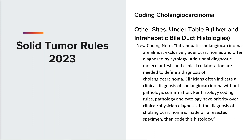For coding histology of liver and intrahepatic bile duct primaries, there is a very helpful clarification made in the other sites chapter of the 2023 solid tumor rules, located under Table 9. The new coding states that intrahepatic cholangiocarcinomas are almost exclusively adenocarcinomas and often diagnosed by cytology. Additional diagnostic molecular tests and clinical collaborations are needed to define a diagnosis of cholangiocarcinoma. Per histology coding rules, pathology and cytology have priority over clinical or physician's diagnosis. Code cholangiocarcinoma only if the path or cytology states cholangiocarcinoma.